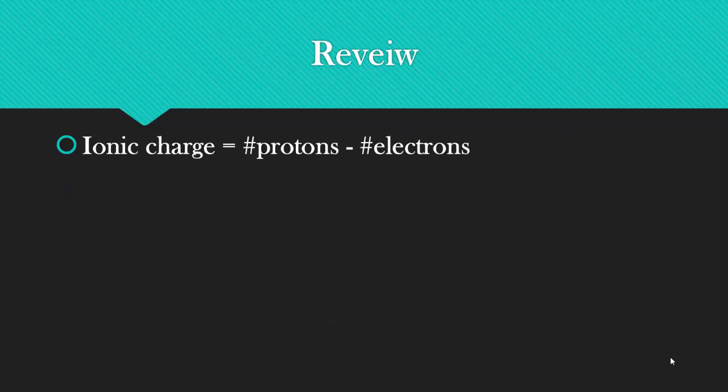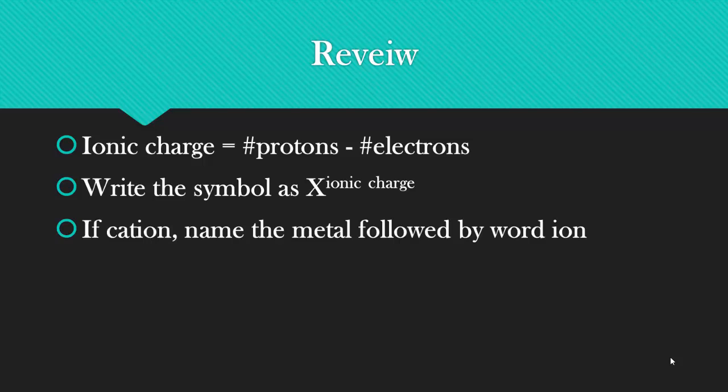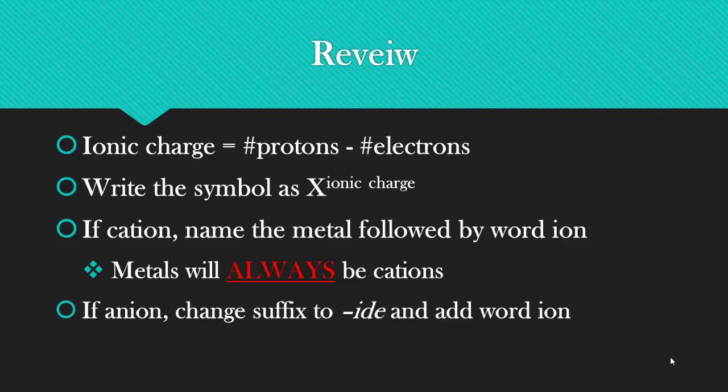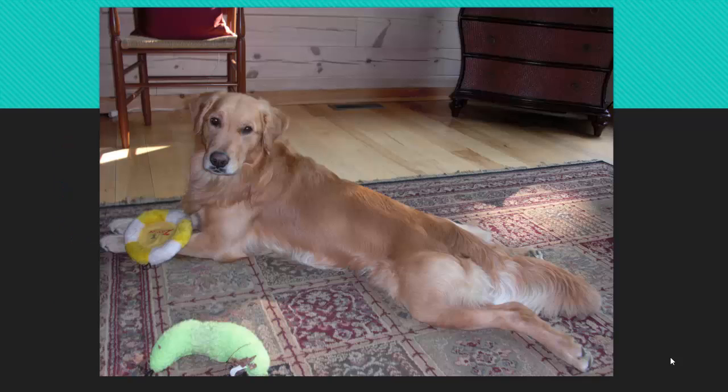The ionic charge is, by definition, the number of protons minus the number of electrons, and that is specific protons minus electrons. You write the symbol as the element X raised to the ionic charge. If it's a cation, it's the name of the metal followed by the word ion. By the way, metals will always be cations. If it's an anion, and anions are non-metals, you change the suffix to IDE and add the word ion. So that is how you form ions for the representative elements.